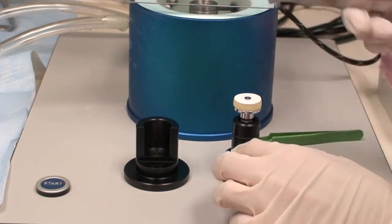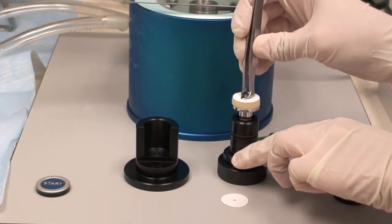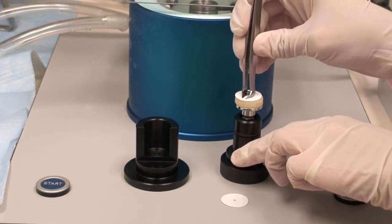Next, remove pin from blotting pad using the tweezers. Then place pin flat side down onto the loading jig.